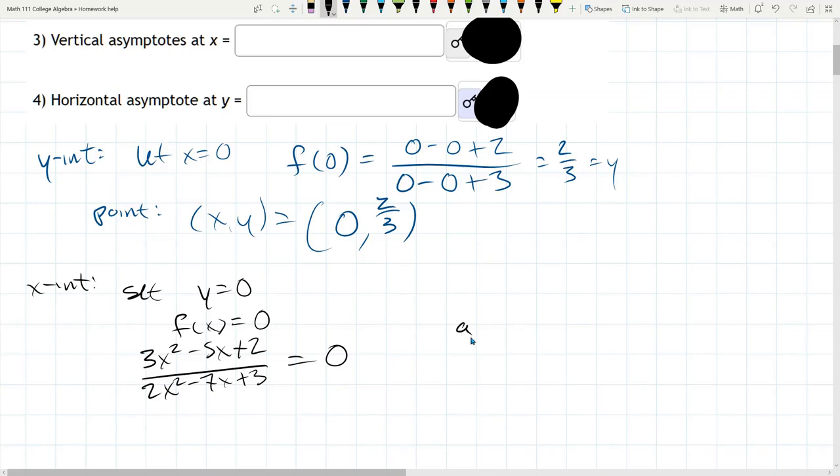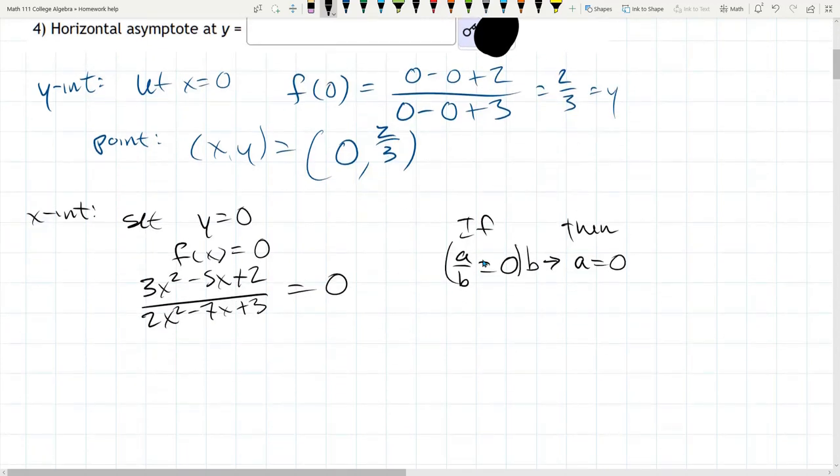So if you have a over b equals zero, this doesn't mean anything about b. b doesn't matter. a. So if this is happening, then a has to equal zero. Algebraically, if you multiply both sides by b, you'll get right over to here where a has to equal zero. So we just want the numerator to equal zero.